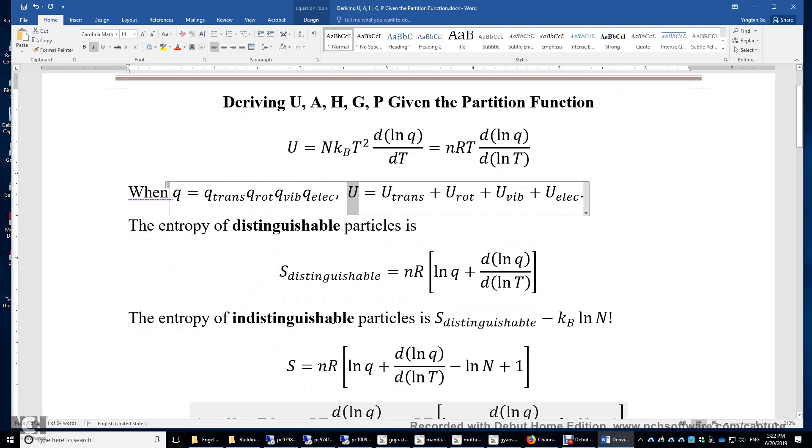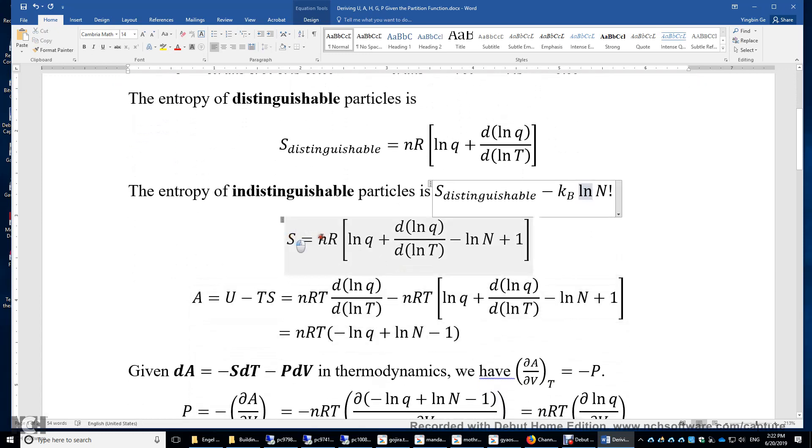For indistinguishable particles, we have to make a correction here. This is because the n-factorial permutations of distinguishable particles collapse into only one combination of indistinguishable particles. Therefore, we need to subtract this entropy of distinguishable particles by kB times the natural logarithm of n factorial. And we have this expression for indistinguishable particles.